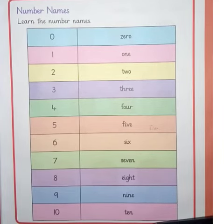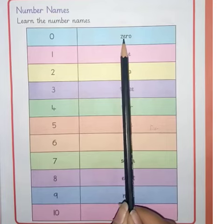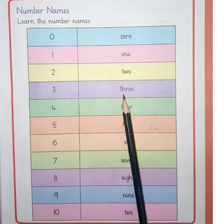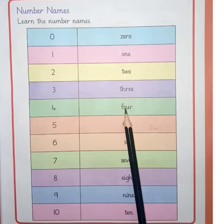You have to learn the number names. Z-E-R-O, zero. O-N-E, one. T-W-O, two. T-H-R-E-E, three. F-O-U-R, four. F-I-V-E, five.